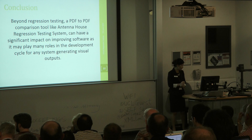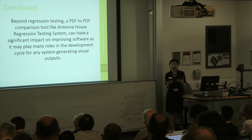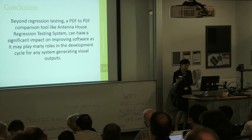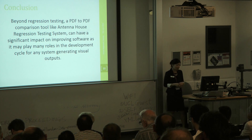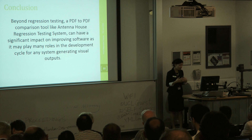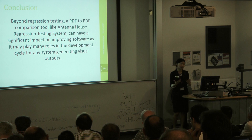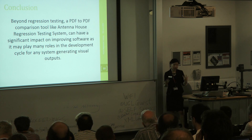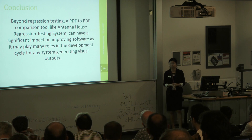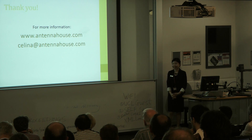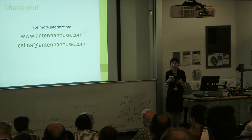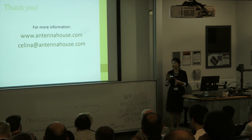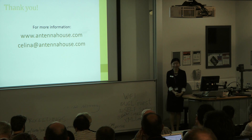To conclude, we call this system a regression testing system, but underneath it all it is essentially a PDF-to-PDF comparison tool. It's important to note that even a simple step like comparing PDFs — those differences that we find, those changes — means a lot. It could tell us a lot about what's going on behind the PDF, what's going on with our software. It can have a significant impact on improving the software behind the PDFs as well as ensuring that the software delivers accurate results. That is the end of my presentation. If you're interested in learning more or seeing more features, just let me know — I'll be here today and tomorrow. We also have an evaluation version if anyone wants to try it.